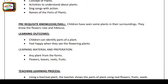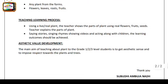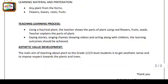Learning outcomes: children can identify parts of a plant and feel happy when they see flowering plants. Learning material and preparation: any plant from the farms, flowers, leaves, roots, fruits.